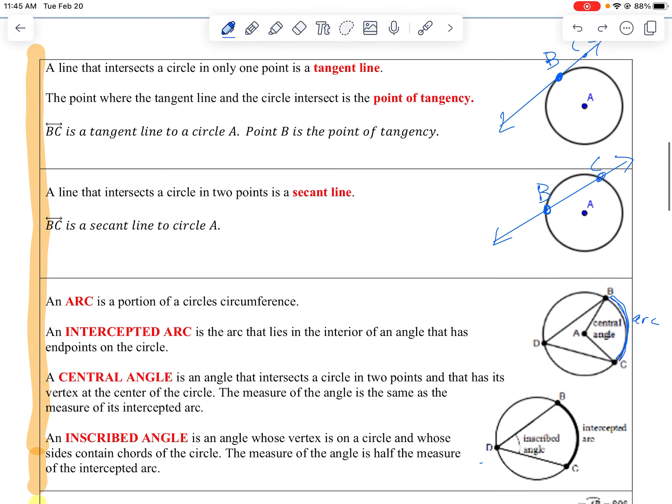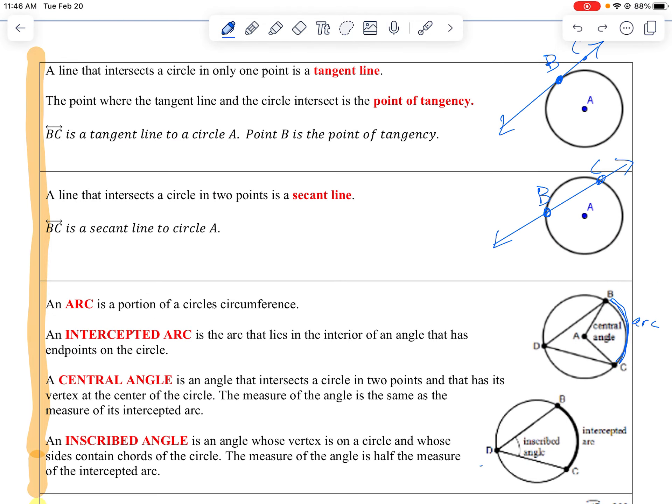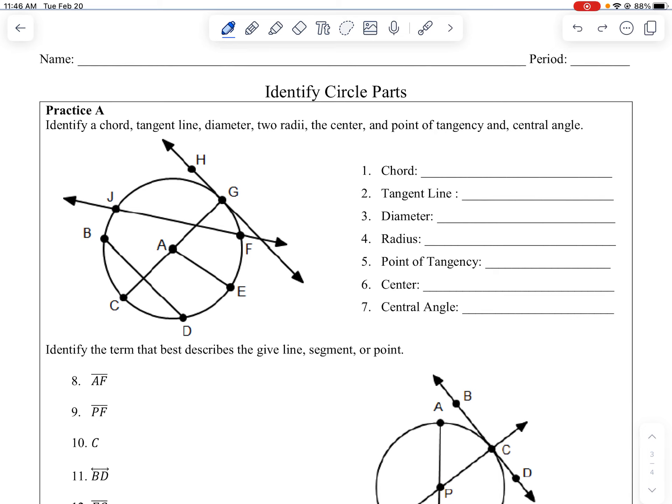Those are the main vocab things in here right now. There are more notes to be done, but that's for future lessons. So let's just jump over to the assignment that goes along with this. This is called identify circle parts.